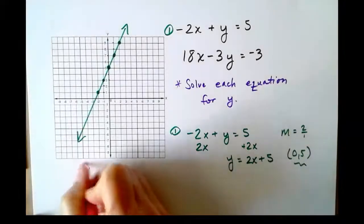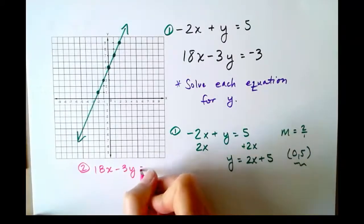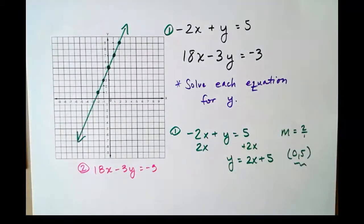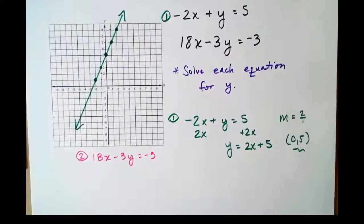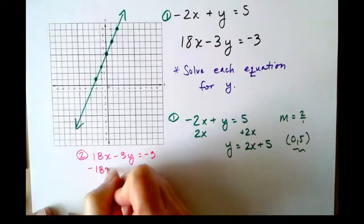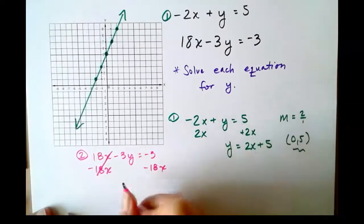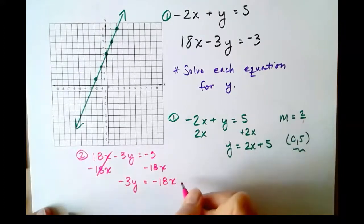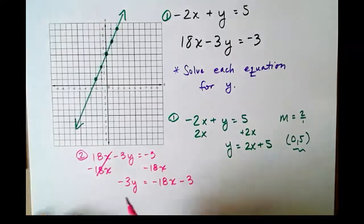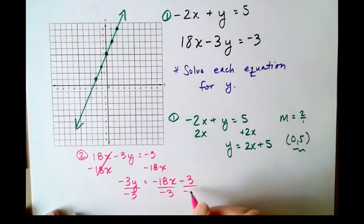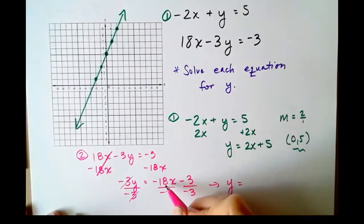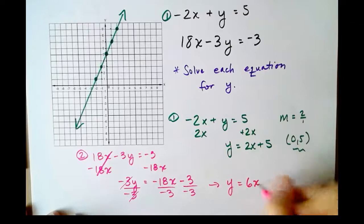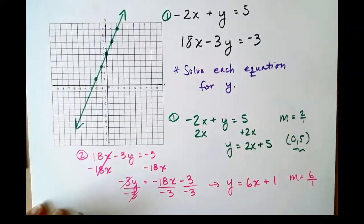Let's work on equation number 2, which is 18x - 3y = -3. Once again, we're going to solve for y because when we solve for y, we put it in slope-intercept form. So -18x, -18x, -3y = -18x - 3. Be careful with the signs here. Divide everything by -3. And we get a brand new equation transformed. y = 6x + 1. So we have a slope of 6 over 1, a very steep line, and a y-intercept at 0, 1.